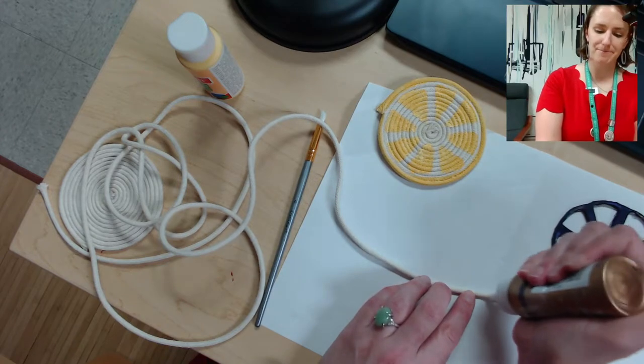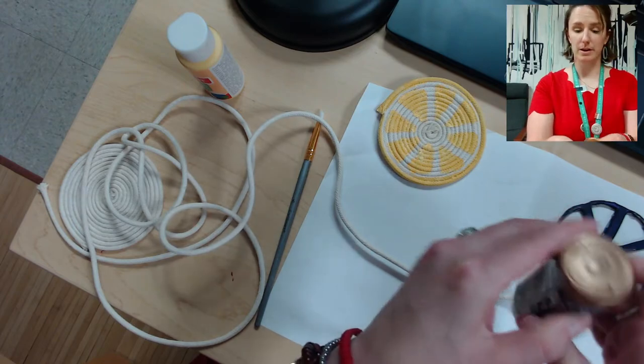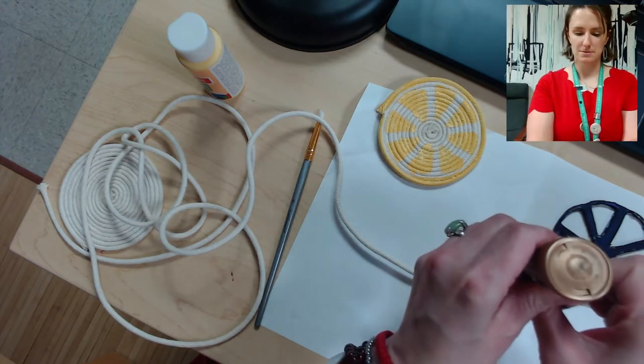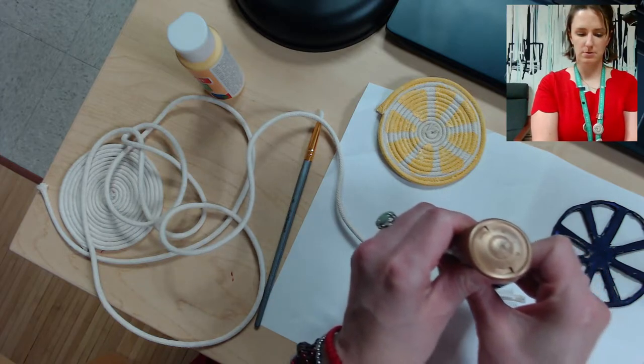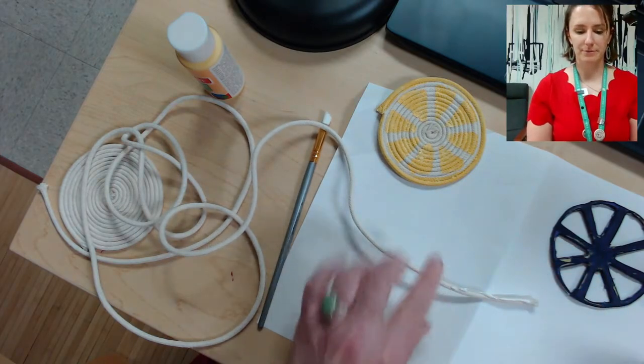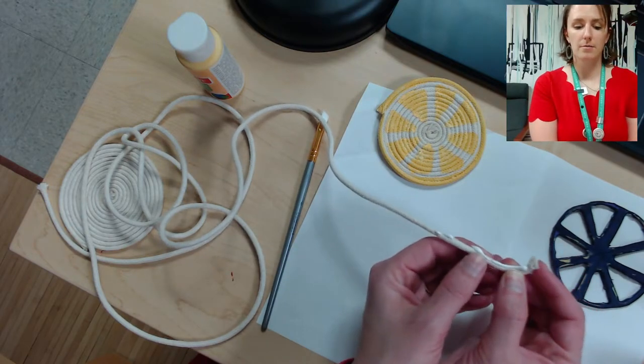You're going to glue about two inches. My glue is running out, sorry. Okay, so to get you started, you're going to do about two inches of rope and then you're going to start coiling it together.